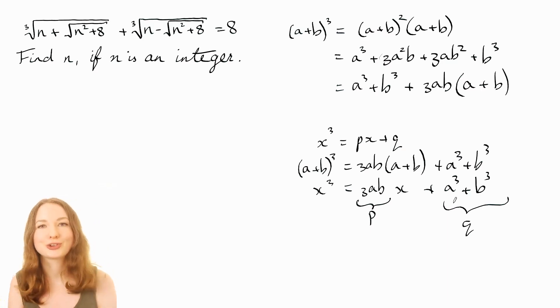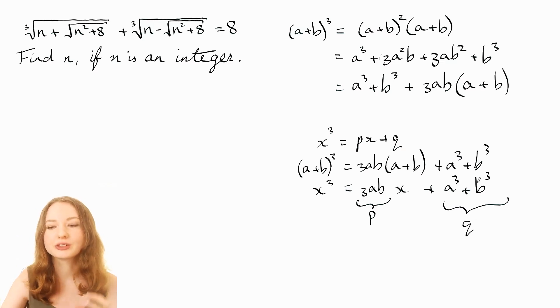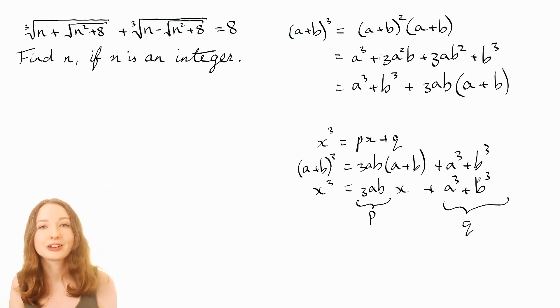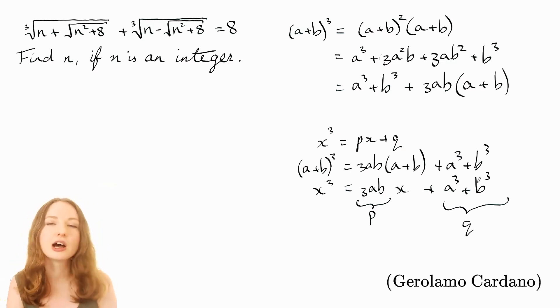So this was really important for the history of complex numbers because when you solve these two equations you get like a quadratic in a, so you have like plus or minus square root of something. And I think it was Cardano who worked out that the formula still worked if it was square root of a negative number,